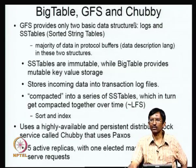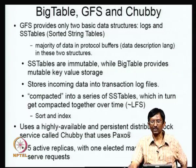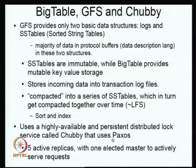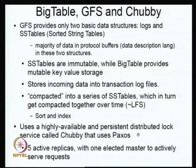The system also uses something called Chubby, which is a highly available and persistent distributed lock service that uses the Paxos consensus algorithm. It has 5 active replicas with an elected master to actively serve requests. It is used whenever mutual exclusion across multiple nodes is needed — for example, to ensure there is only a single master at any time.